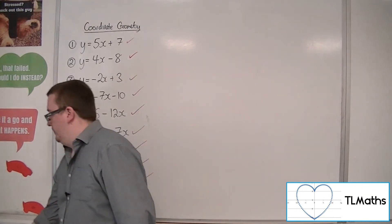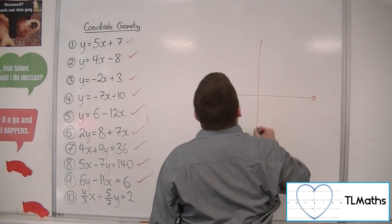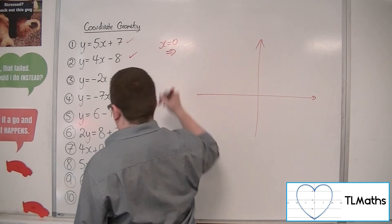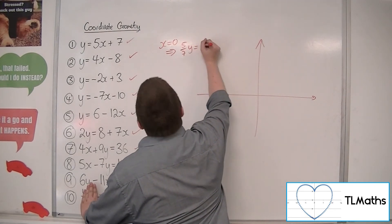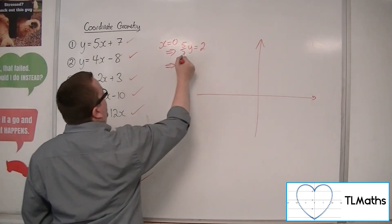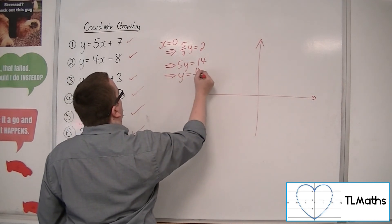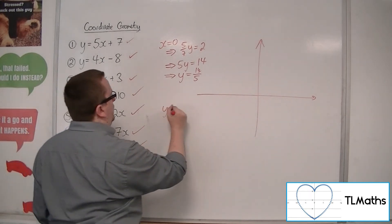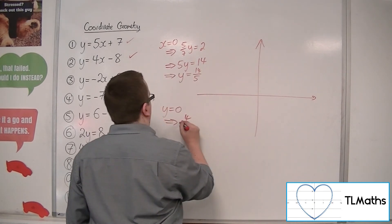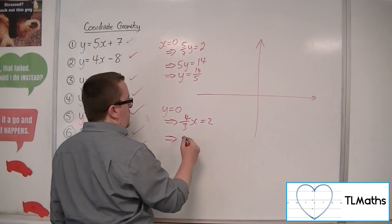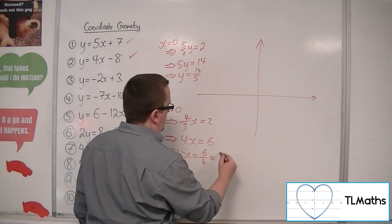Right. So finally, number 10. We've got 4 thirds x plus 5 sevenths y equals 2. So once again, I best take some notes on this one. So when x is 0, okay, covering up the 4 thirds x, I get 5 sevenths y is equal to 2. So if you multiply both sides by the 7, and then divide both sides by the 5, y is equal to 14 fifths. So when y is 0, covering up the 5 sevenths y, I get 4 thirds x equals 2. So multiply both sides by the 3, then divide both sides by the 4. So 6 quarters or 3 halves.